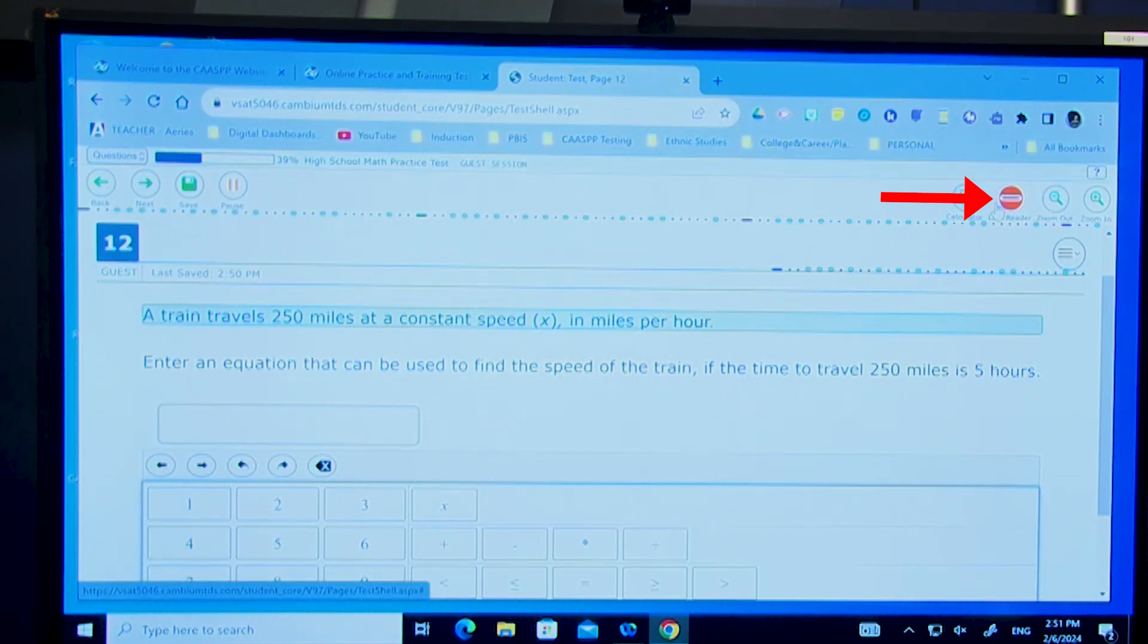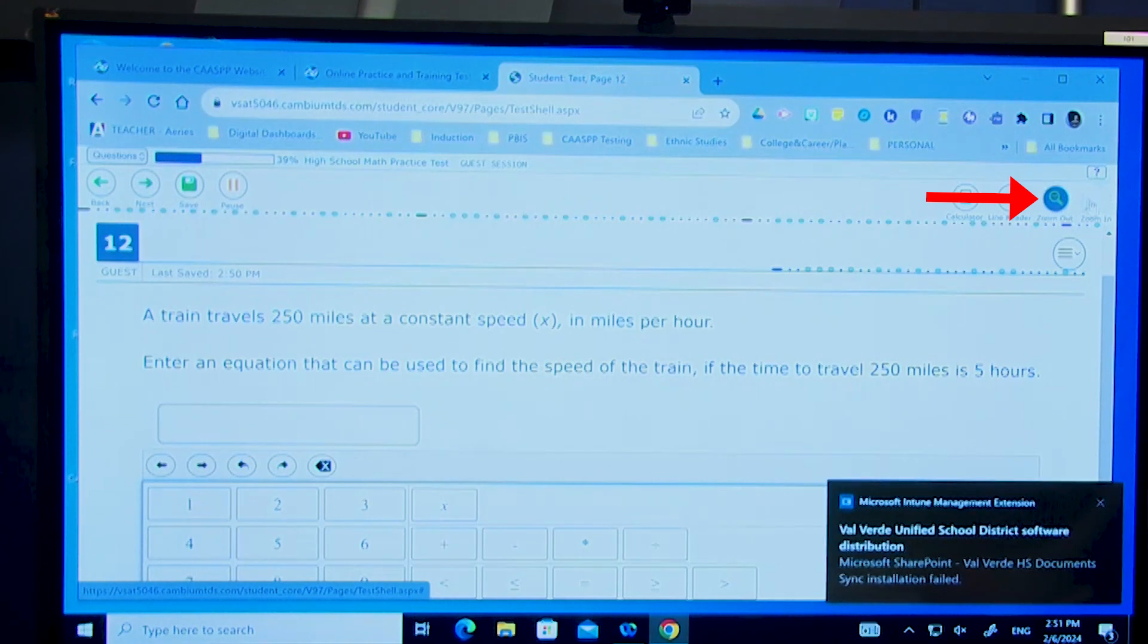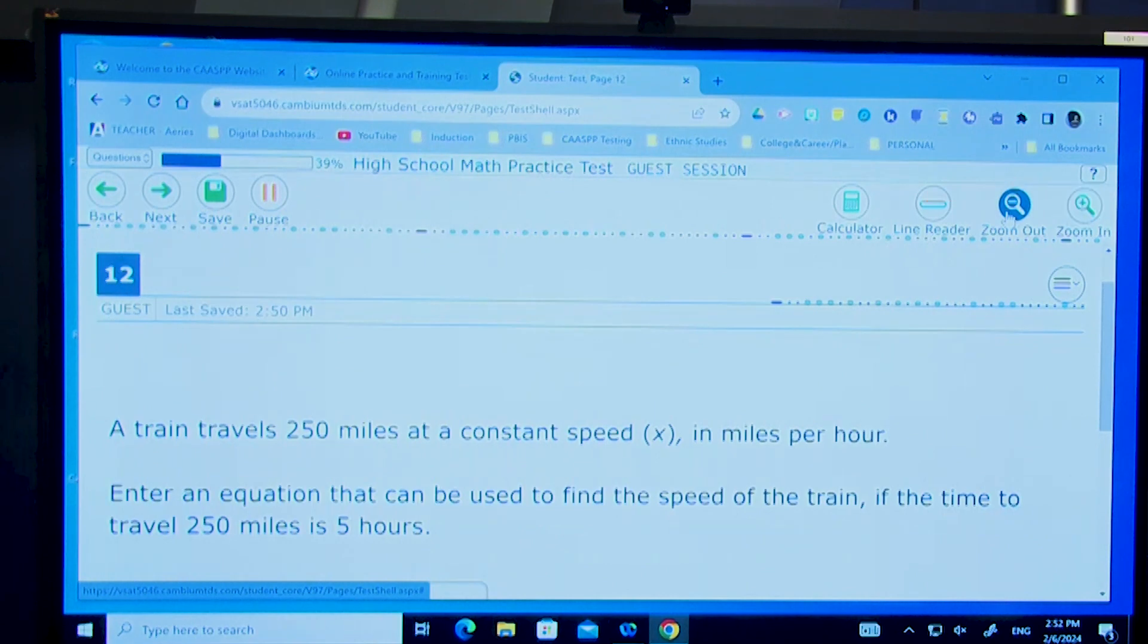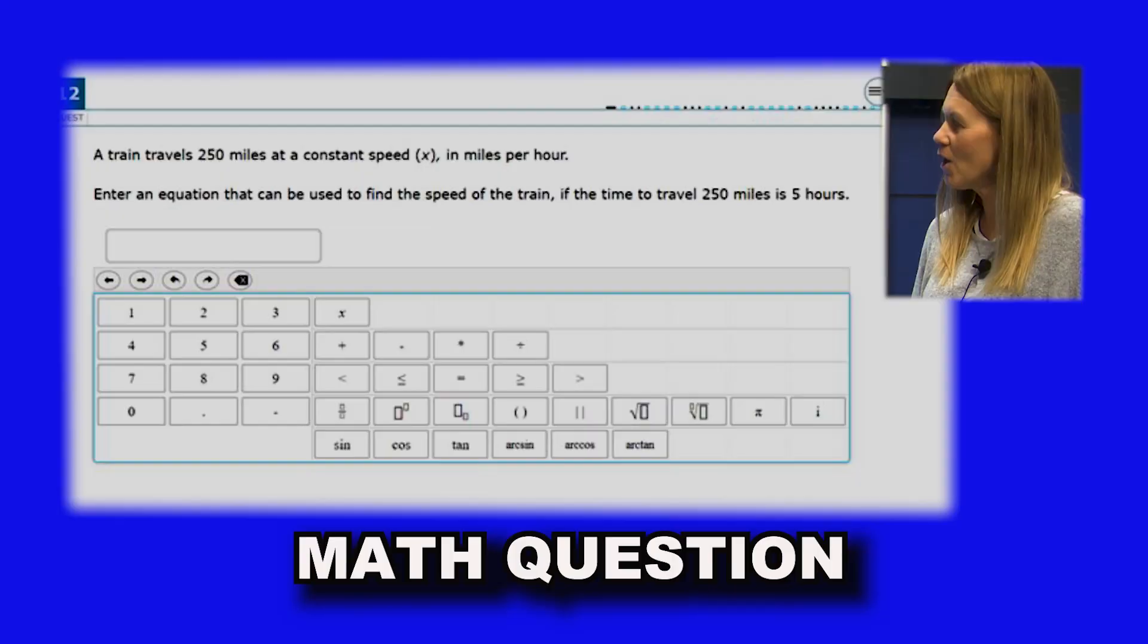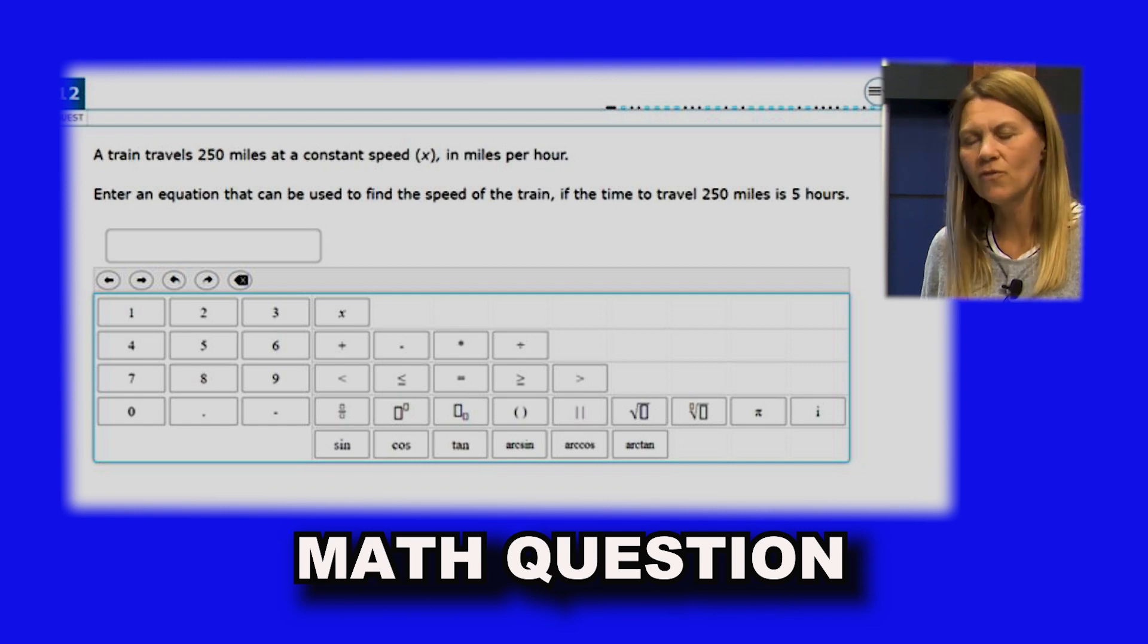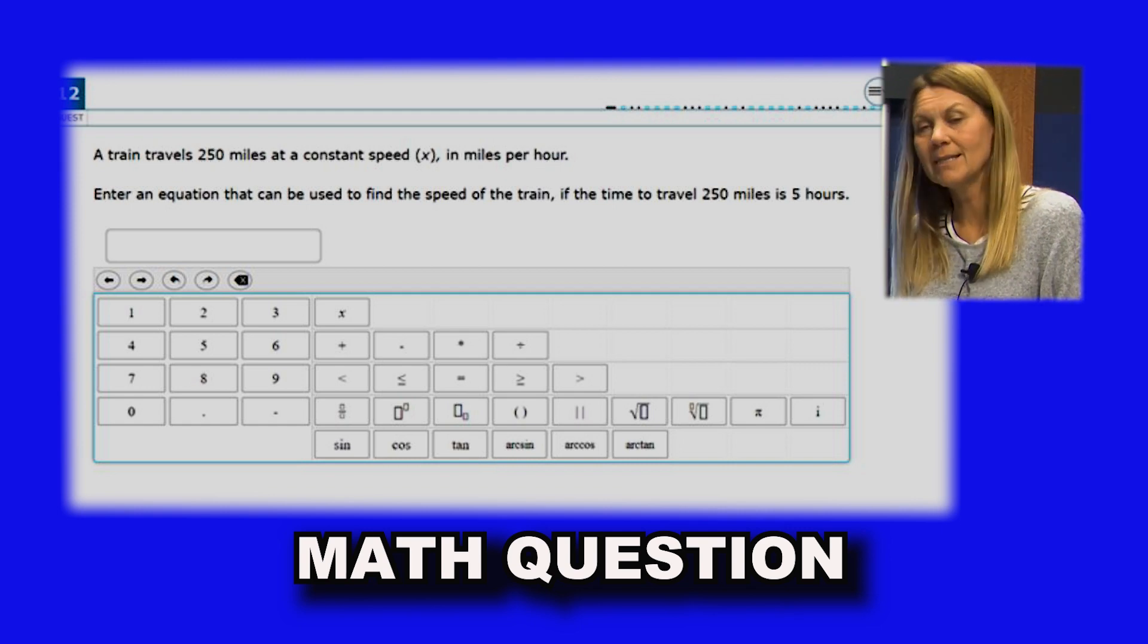A zoom out will make it smaller, zoom in will also work as well. All right, so if we need it to get bigger you can do it that way. For today we're going to make it a little bit smaller. All right, so here's my question: A train travels 250 miles at a constant speed in miles per hour. Enter an equation that can be used to find the speed of the train if the time to travel 250 miles is five hours. Now what I want to say, a couple things, is that this question